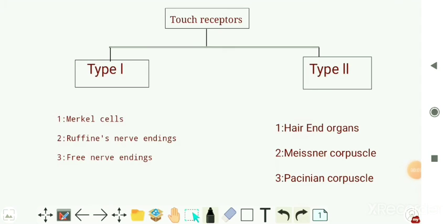Let's see touch receptors. These are classified into type 1 and type 2. Type 1 are slow adapting and type 2 are rapid adapting.